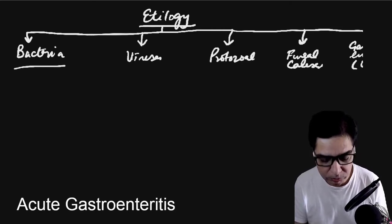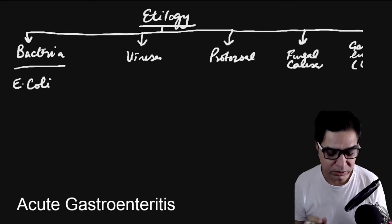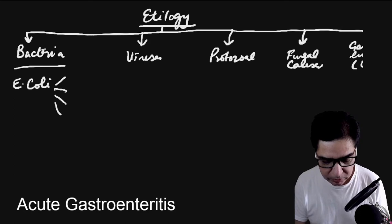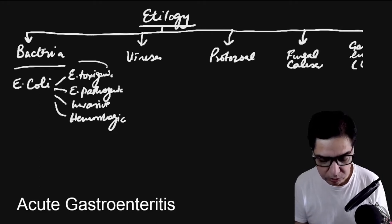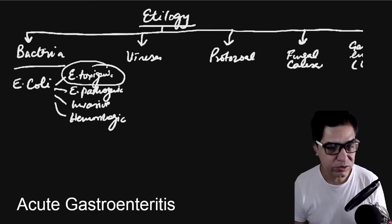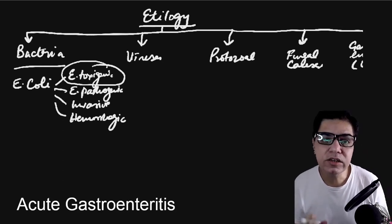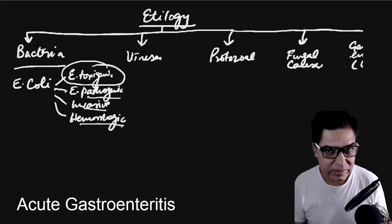The most common bacterial cause of acute gastroenteritis worldwide is E. coli. It has four strains: enterotoxygenic, enteropathogenic, enteroinvasive, and enterohemorrhagic. Among these, enterotoxygenic is the most common cause and is also known as traveler's diarrhea — one of the most common causes of acute gastroenteritis worldwide.